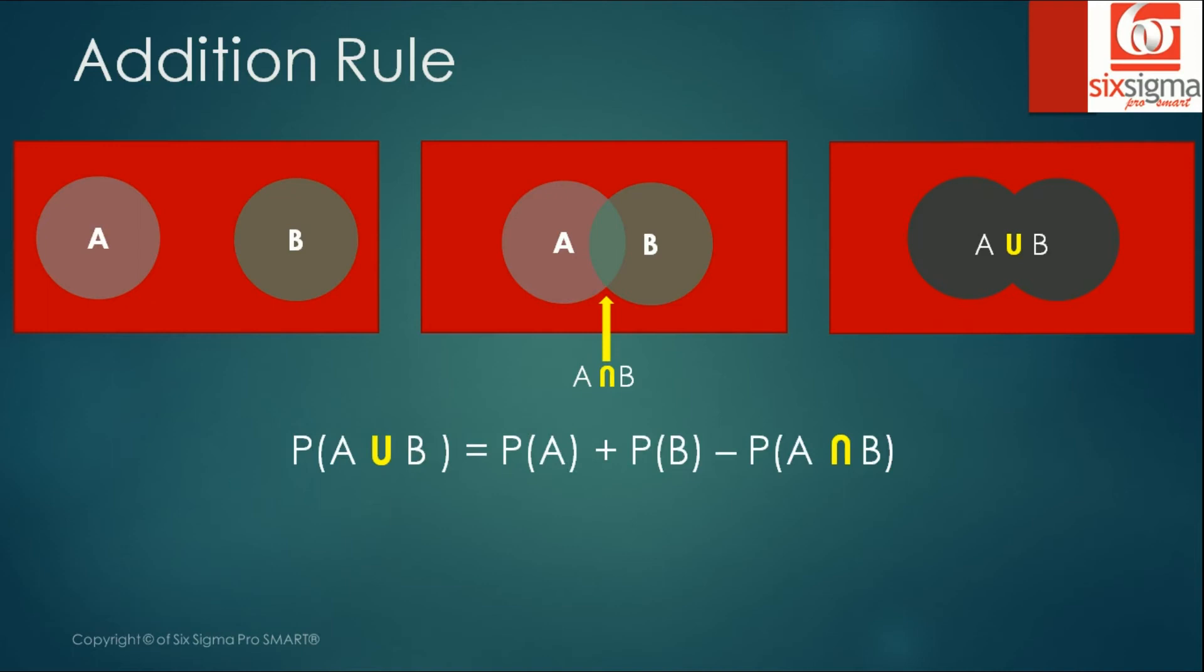Probability of A union B equals probability of A plus probability of B. And since in this formula so far we have counted A intersection B twice so we subtract it this time. So the entire formula appears like this. For the functions which do not have anything in common or are disjoint, probability of A union B is equal to probability of A plus probability of B.